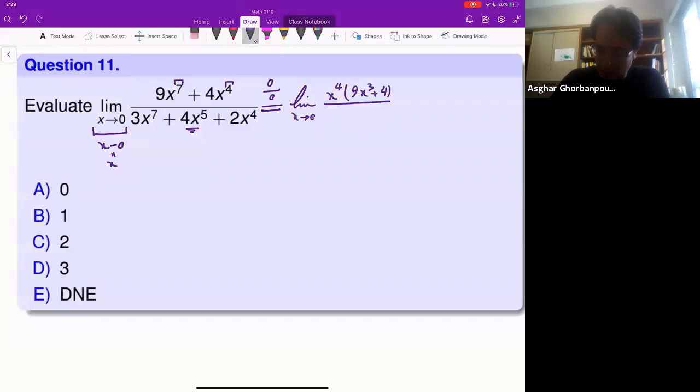And in the denominator, also all of the terms have this x^4, so it will be 3x to the power 3 plus 4x plus 2 as x goes to zero.